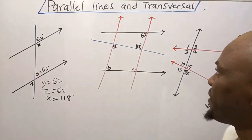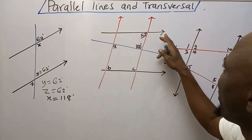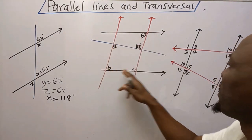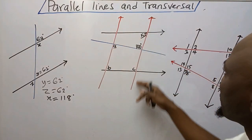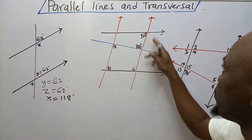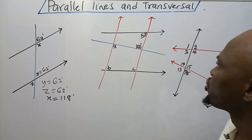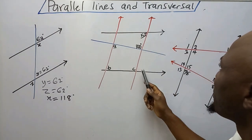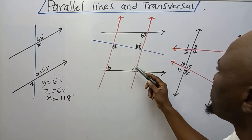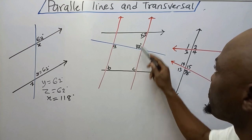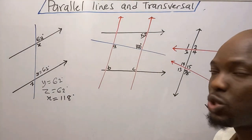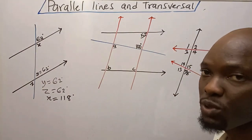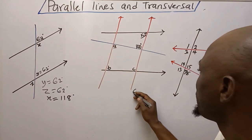Let's solve the next problem. We have parallel lines here — these are parallel lines in black ink — and this is a transversal to those parallel lines, and this is also a transversal to this parallel line. On this transversal I have a pair of angles C and 52 degrees. They have a relationship — they are consecutive interior angles and add up to 180 degrees.